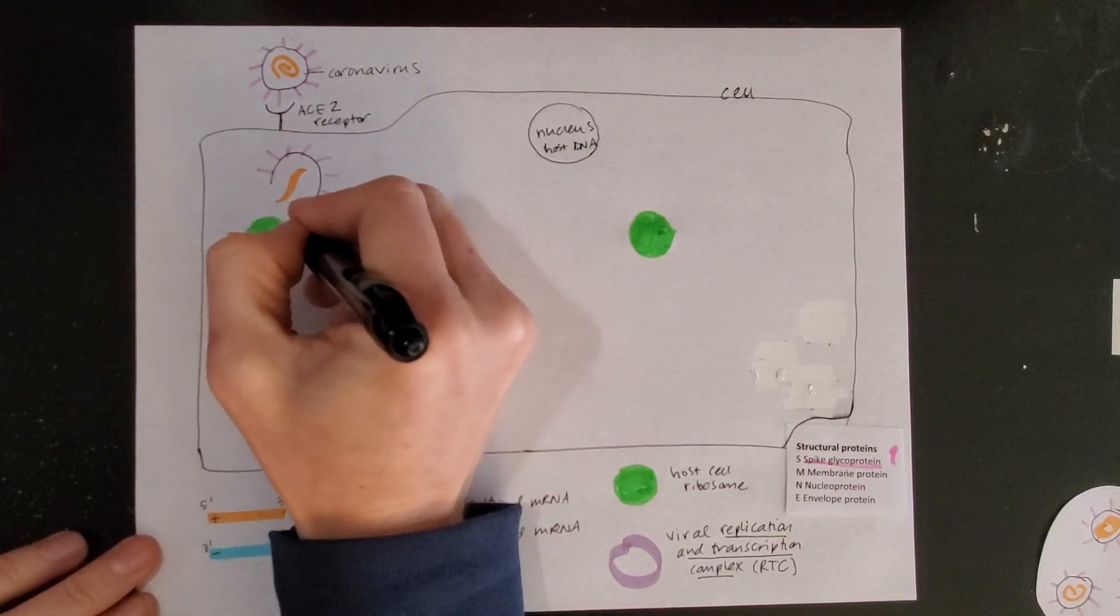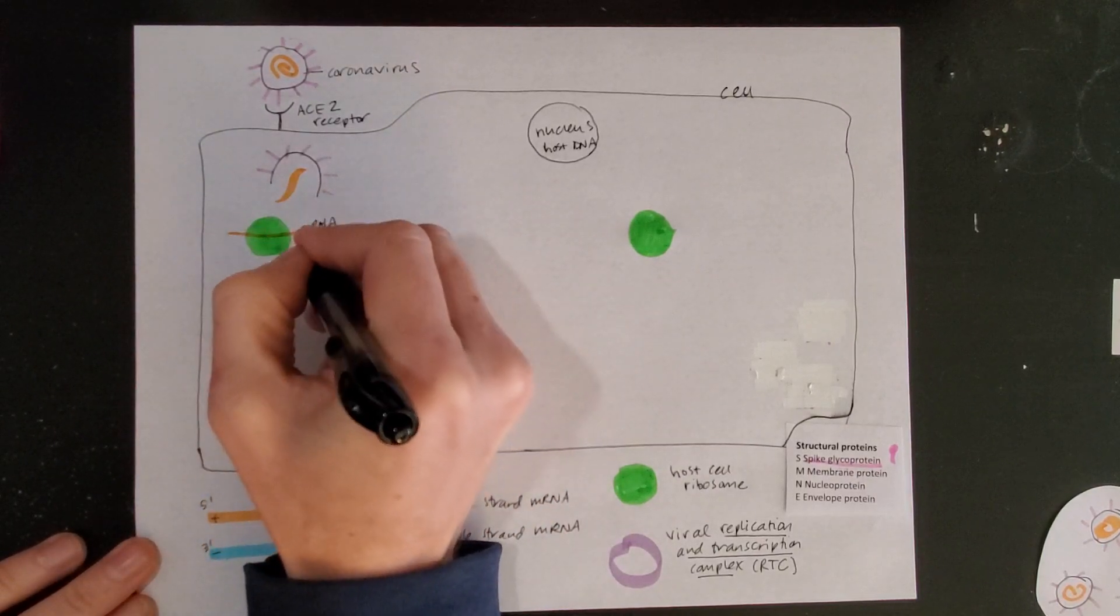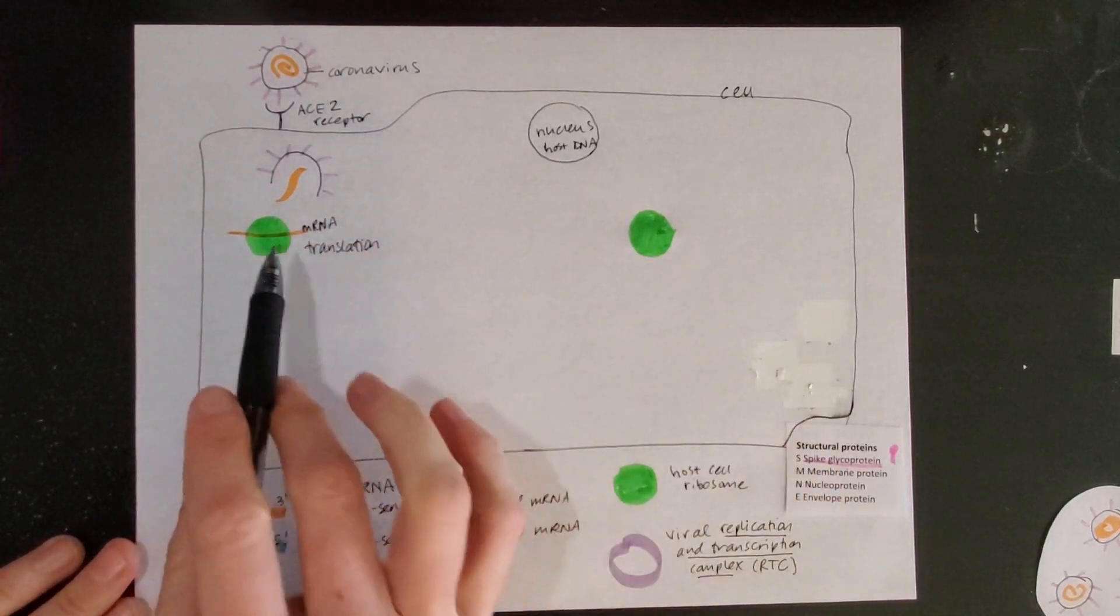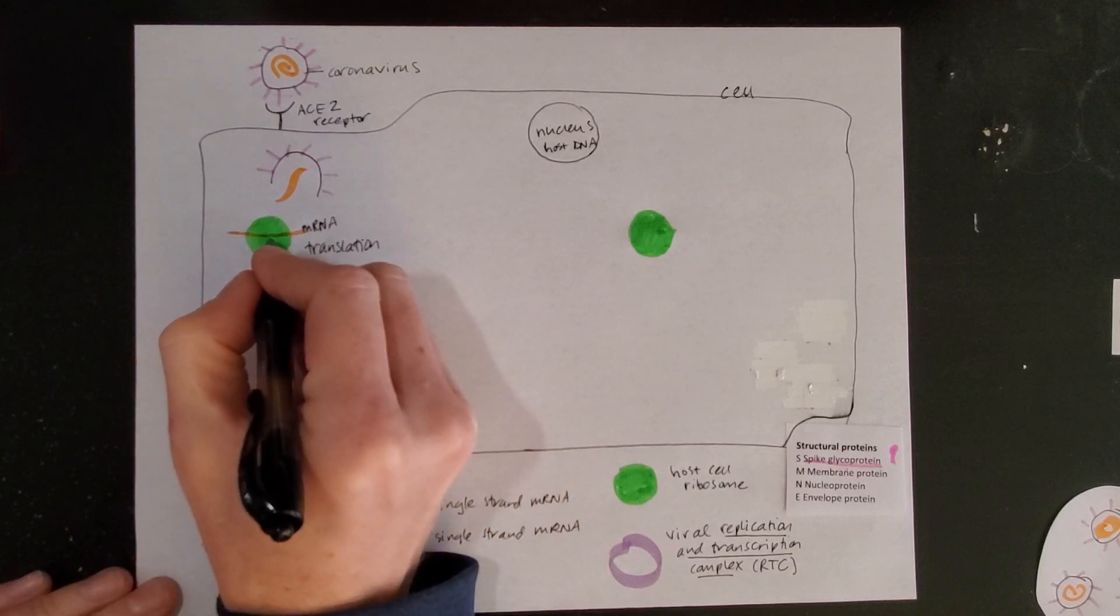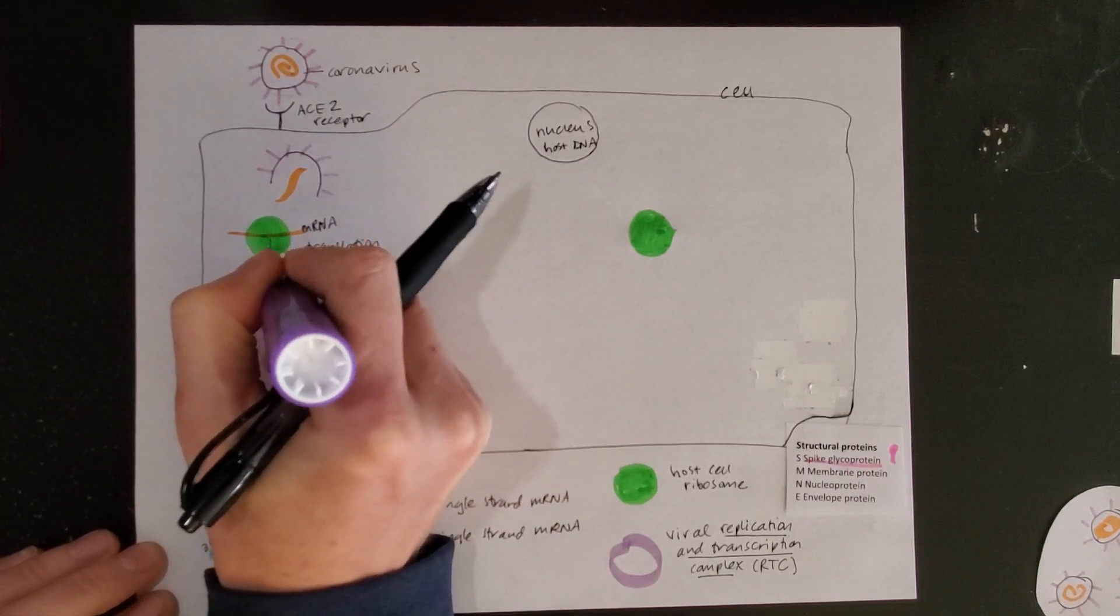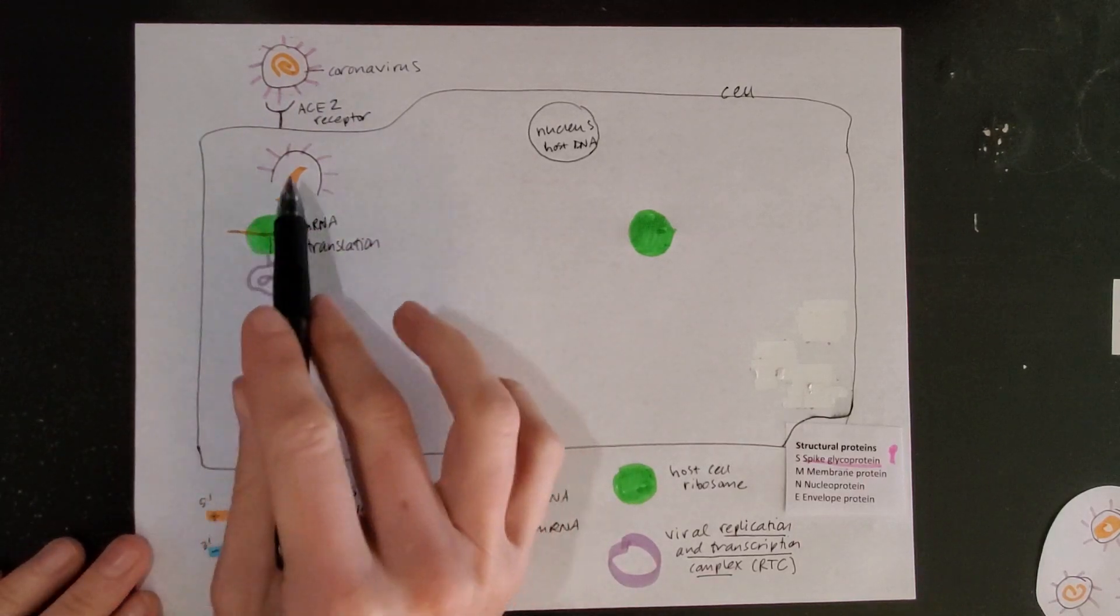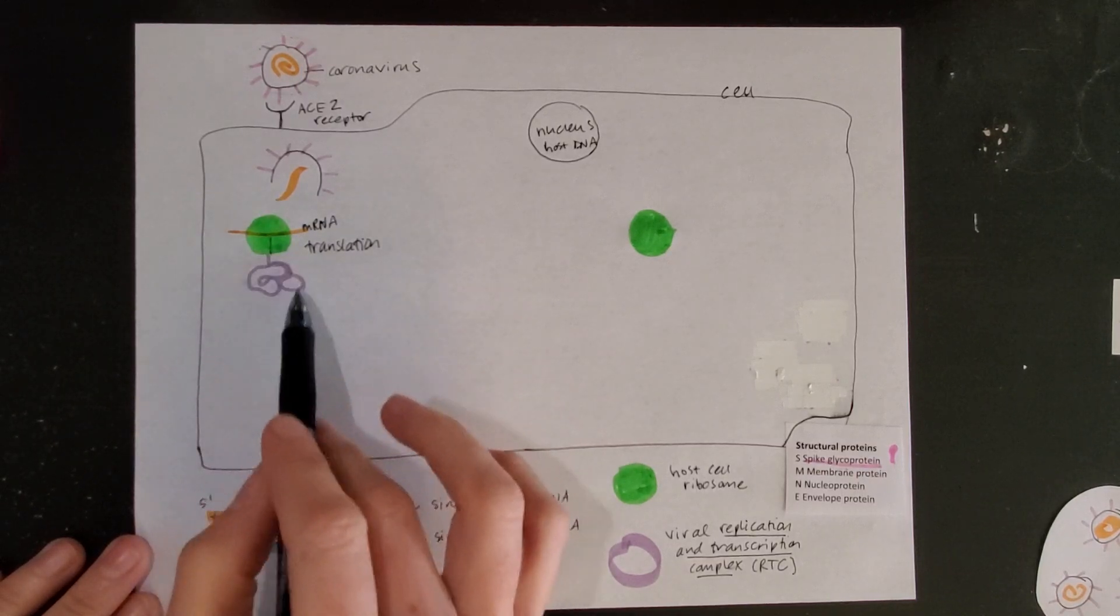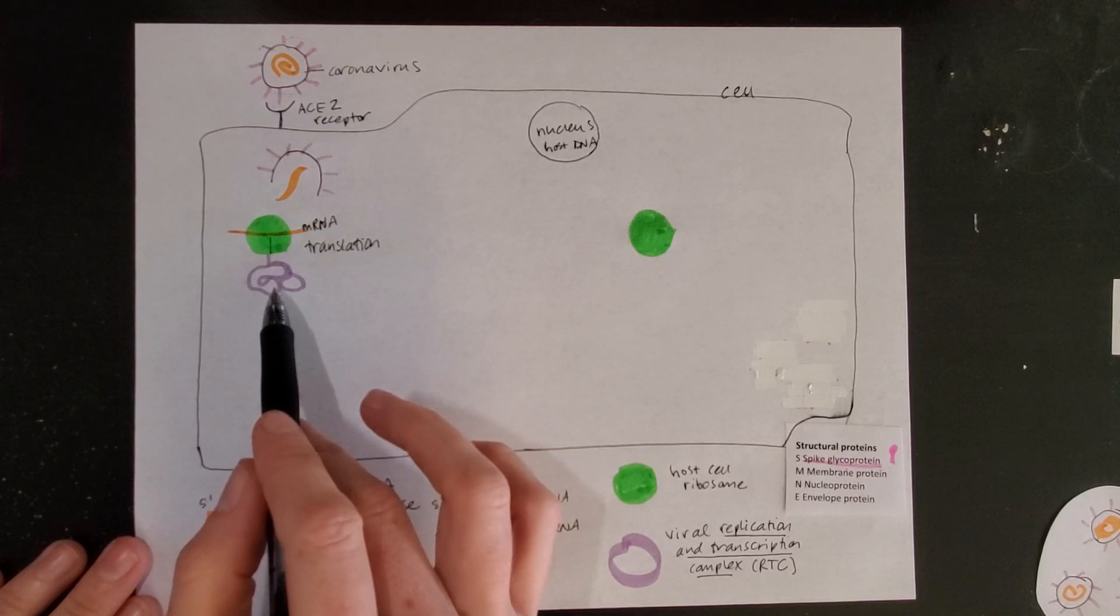It's going to be read by the host ribosome. When you have mRNA going through a host ribosome, this process is called translation. And we know that translation gives us a protein. So as this mRNA is being read, I'm going to get a protein. This is actually about two-thirds of the mRNA in the coronavirus genome used to make this protein. And that's actually two polyproteins.